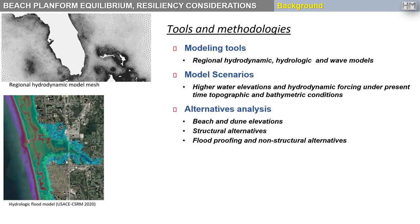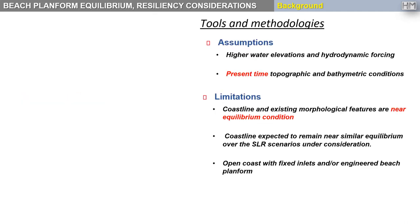In many cases, resiliency and adaptation programs rely on regional hydrodynamic and hydrologic models to support the analysis. Such approach is based on key assumptions of evaluating scenarios of higher water elevations and hydrodynamic forcing under present-time topographic and bathymetric conditions. We are limited to the key assumption that the coastline and its equilibrium shape is near equilibrium, and it will remain under that shape of equilibrium over sea level rise scenarios under consideration.